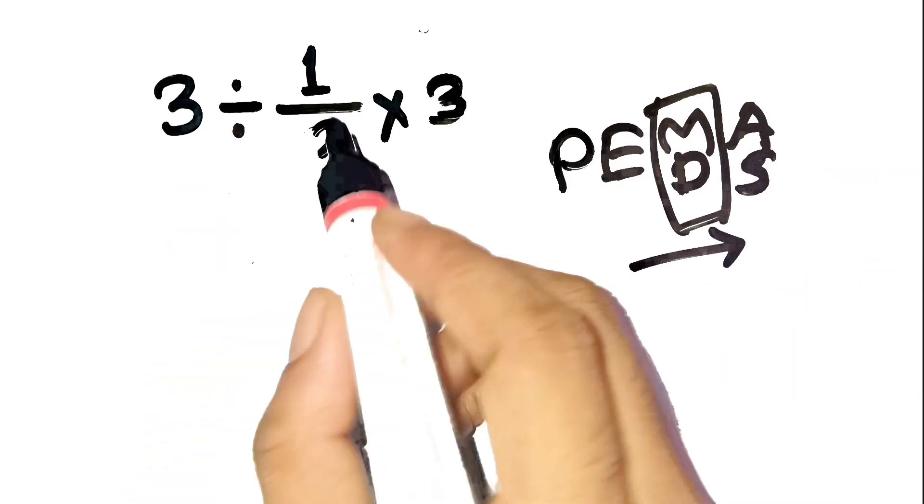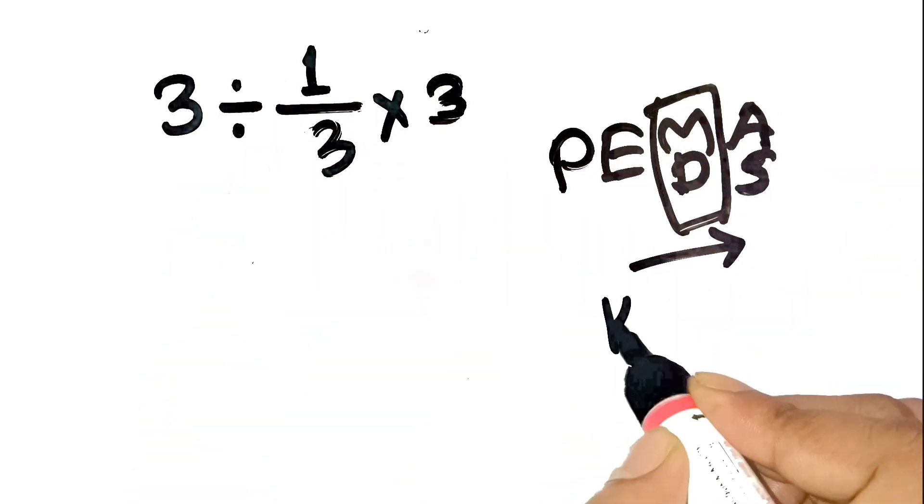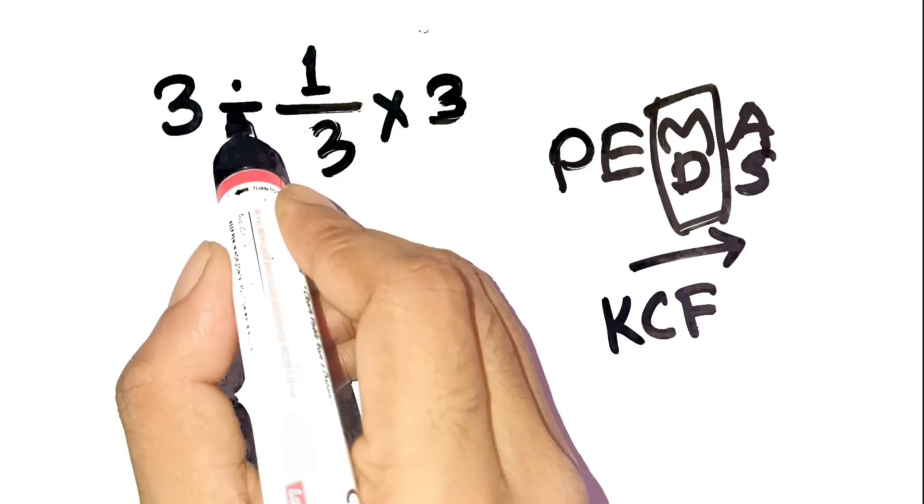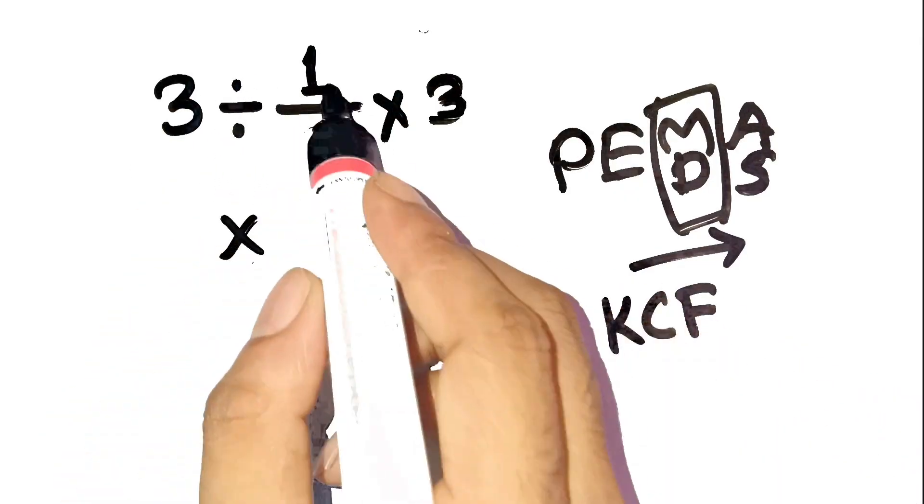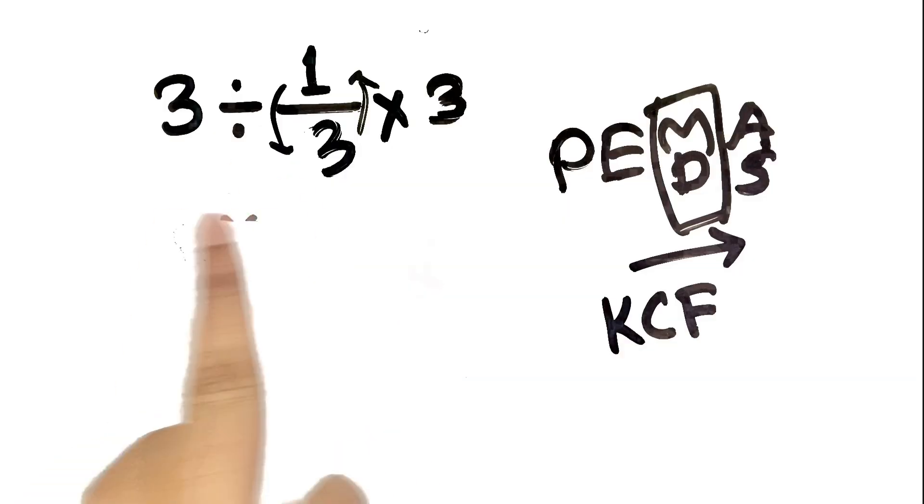Also, whenever you divide by a fraction, remember the keep, change, flip rule. Keep the first number, change the division sign to multiplication, and flip the fraction. That's the magic trick for fractions.